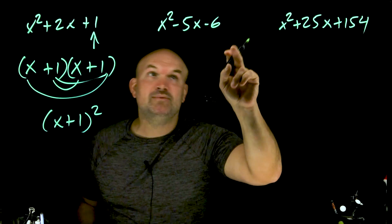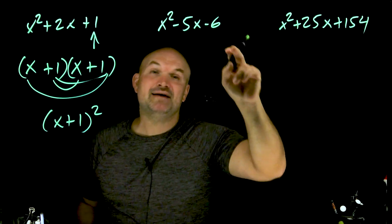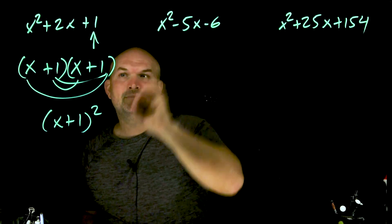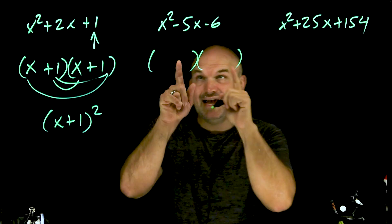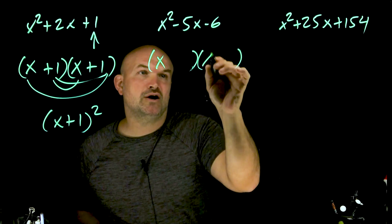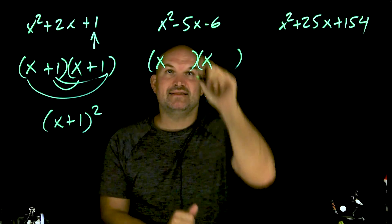So now we just opened up a whole different subset. We could have negative 6 and 1, positive 6 and negative 1, 3 and negative 2, negative 3 and positive 2. There's a lot of options. But we know we can break it up into a product of two binomials, and these first two terms are going to be x and x.